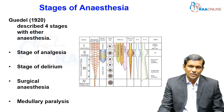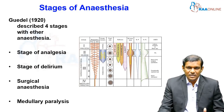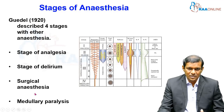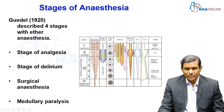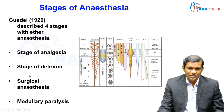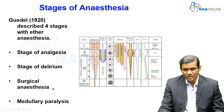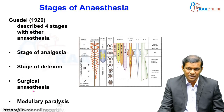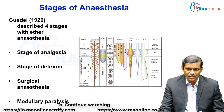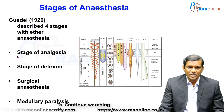The stages of anesthesia were described by Gudel in 1920. There are four stages: Stage 1 is the stage of analgesia, Stage 2 is the stage of delirium, Stage 3 is the stage of surgical anesthesia, and Stage 4 is medullary paralysis. For surgery, we need to maintain the patient in Stage 3, specifically up to Plane 2 of surgical anesthesia, to conduct smooth surgery. The patient first passes through the stage of analgesia.